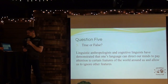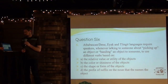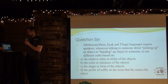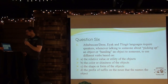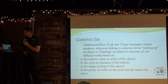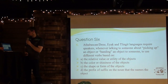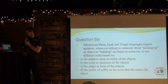Question six. Athabascan, Dene, and Tlingit languages require speakers, whenever talking to someone about picking up an object or handing an object to someone, to use different verbs based on: A, the relative value or utility of the objects; B, the color or shininess of the objects; C, the shape or form of the objects; or D, the prefix or suffix on the noun that names the object.